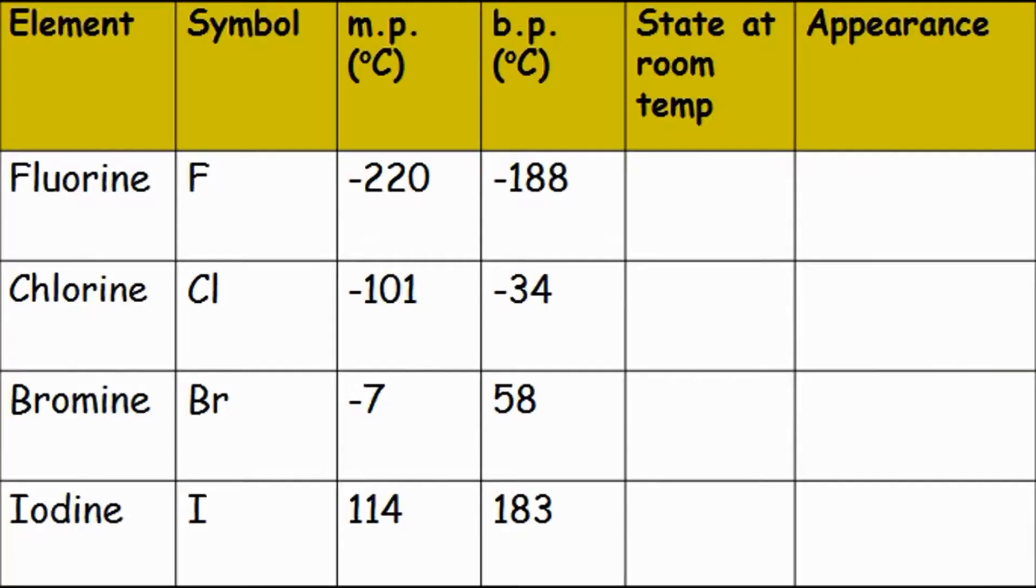A common exam question tells you the melting points and boiling points of a substance and asks you to state whether it will be a solid, liquid, or gas at room temperature. If we say room temperature is about 20 degrees, look at fluorine. It melted at minus 220 degrees C and boiled at minus 188 degrees C. So by room temperature, by plus 20 degrees C, it has melted and boiled. What state is something in if it's melted and boiled? It's going to be in a gas state. Fluorine is a gas. Chlorine has also melted and boiled by this point. By plus 20 degrees C, it has already boiled at minus 34, so we know it's a gas as well.